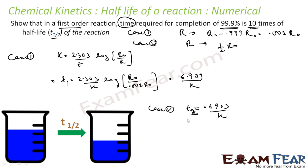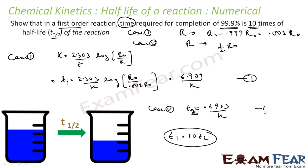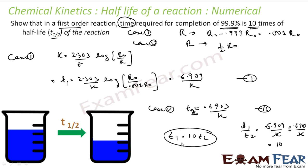Comparing: T₁ / T½ = (6.909 / K) / (0.693 / K) = 10. Therefore T₁ = 10 × T½. This confirms that the time to complete 99.9% of a first-order reaction is exactly 10 times the half-life.